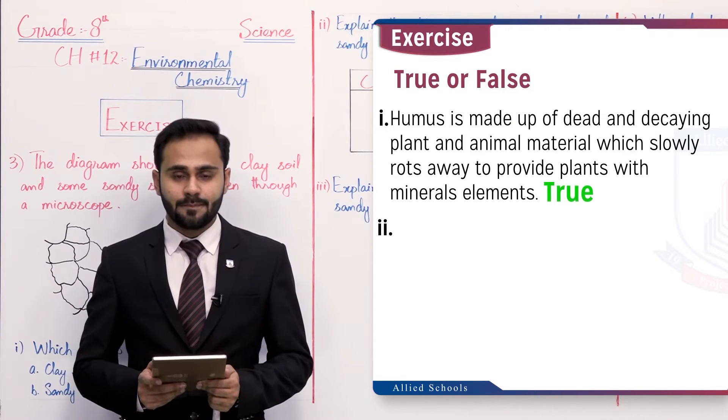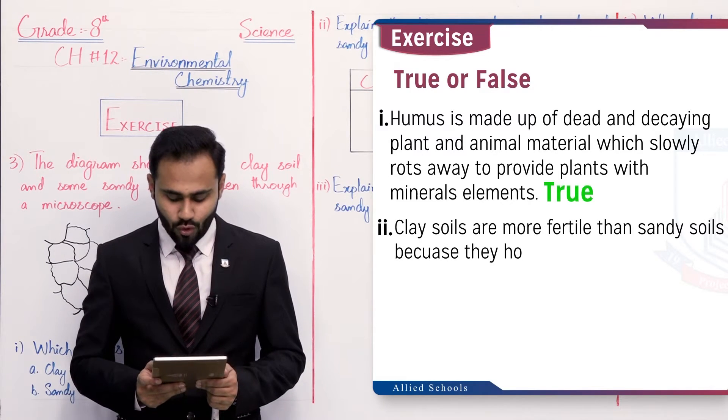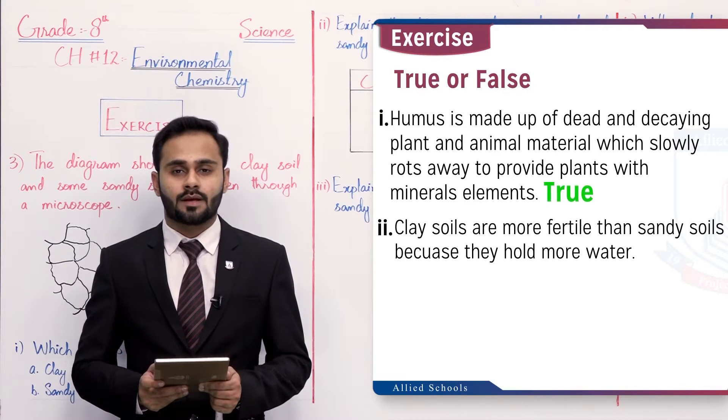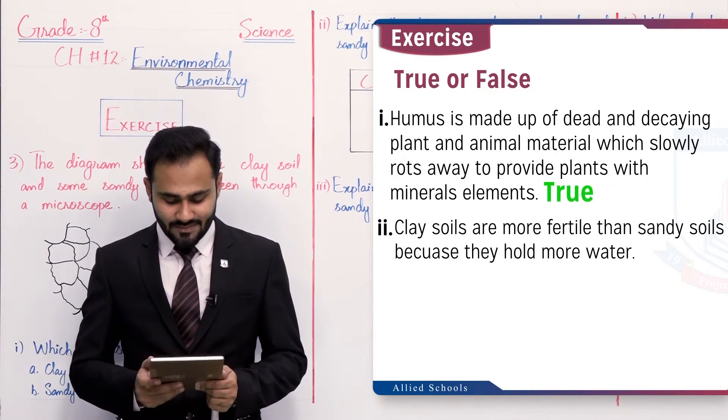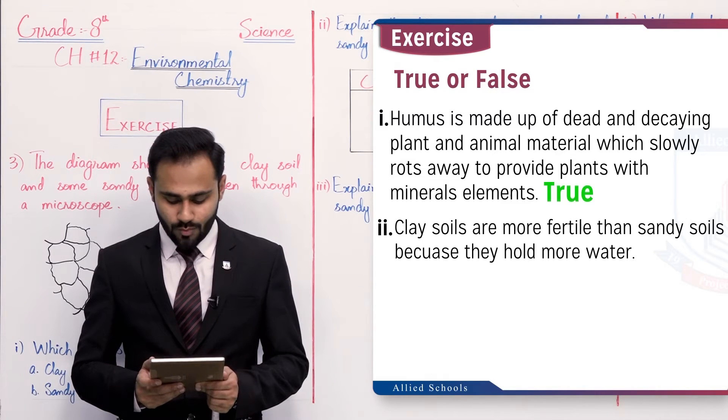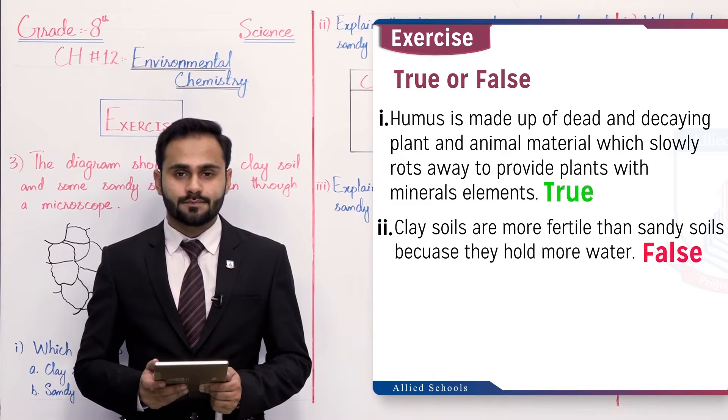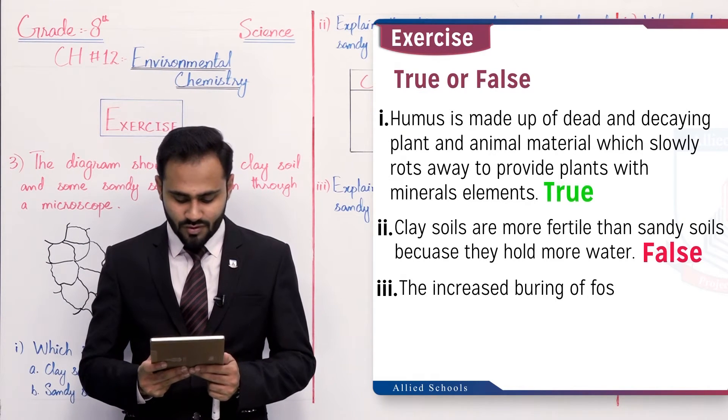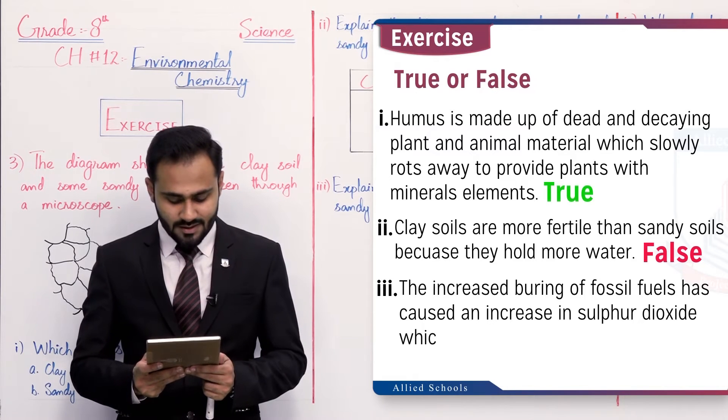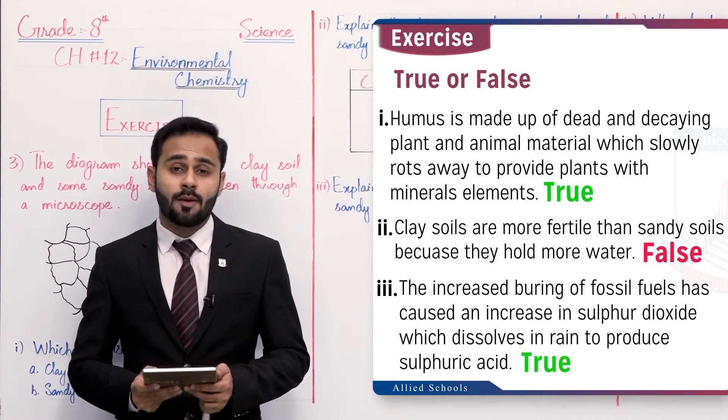Second statement: clay soils are more fertilized than sandy soils because they hold more water. It's false. The third statement: the increased burning of fossil fuel has caused an increase in sulfur dioxide which dissolves in rain to produce sulfuric acid. Yes, this statement is true because the fossil fuel coal is burned, in this case sulfur dioxide gas is produced. Sulfur dioxide gas ki wajah se sulfuric acid ban jata hai jo ki acid rain cause karti hai.